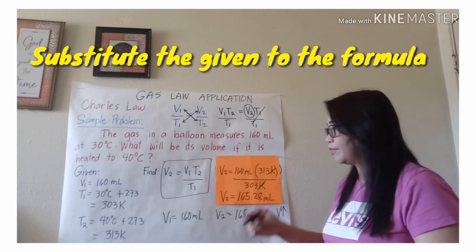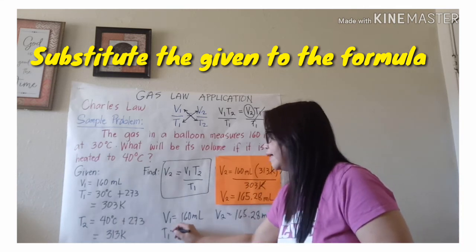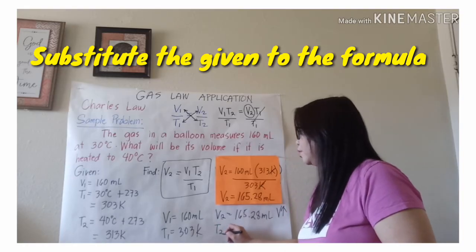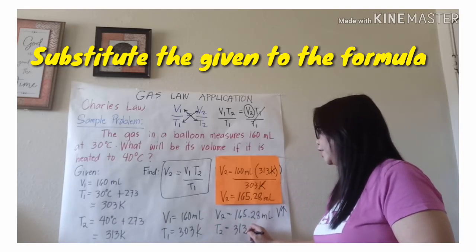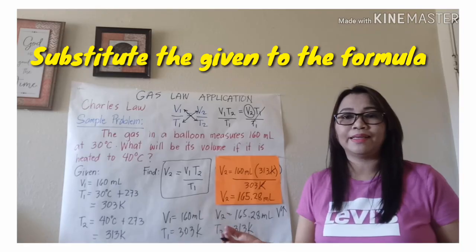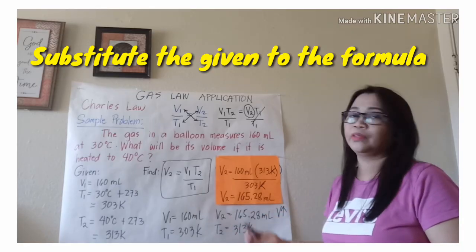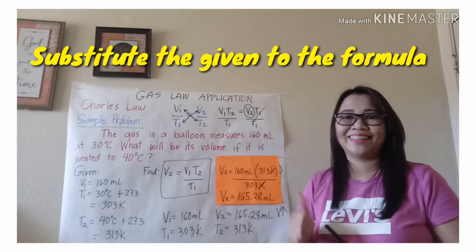Did the temperature also increase? T1 is 303 Kelvin, and then T2 is 313 Kelvin. Definitely, there is an increase in temperature. That's why the volume also increases. Get it? All right.